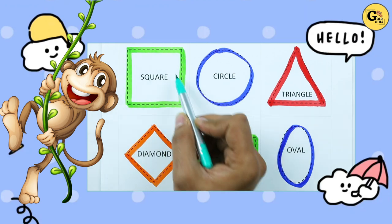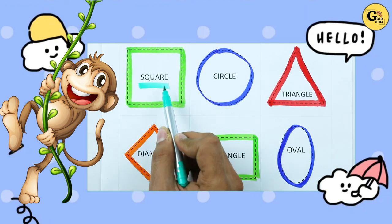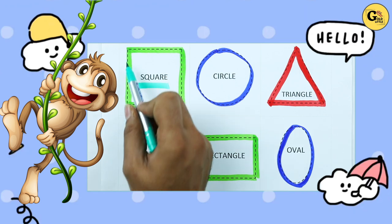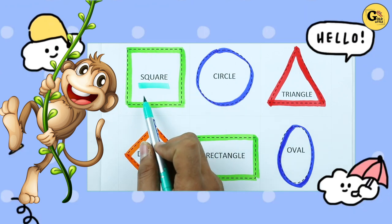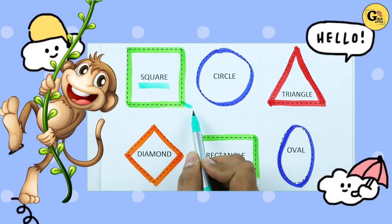Which shape is this? Tell me. Square. S-Q-U-A-R-E. It's a square with green color.